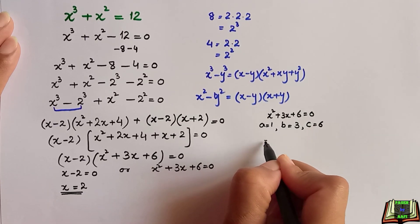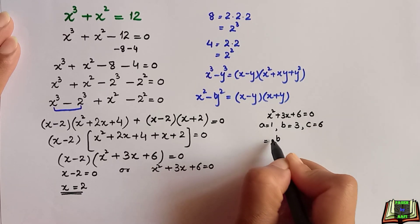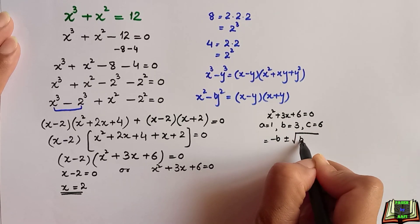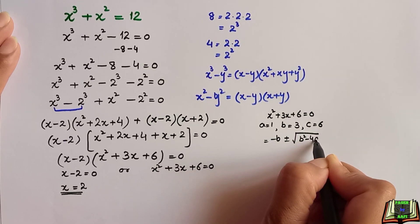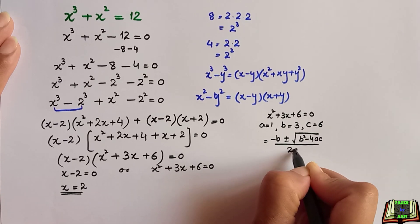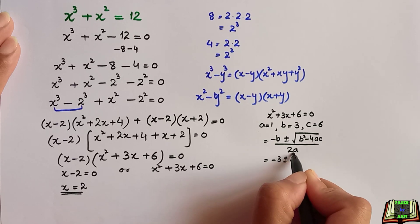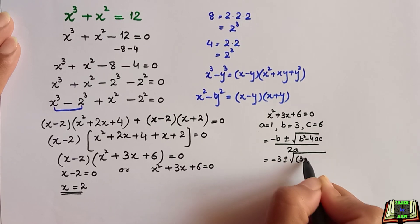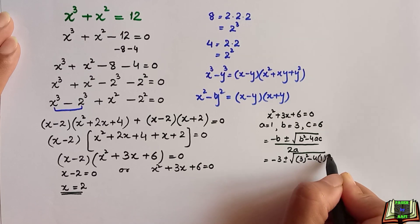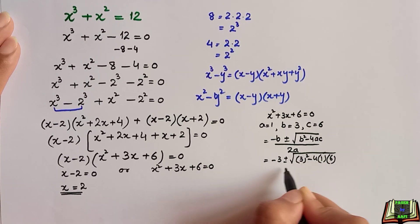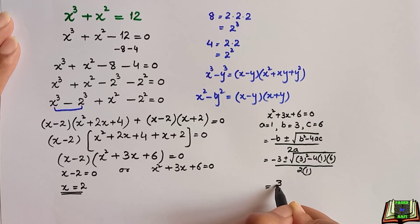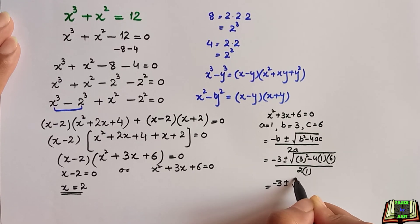Let's revise the quadratic formula: minus b plus minus root of b square minus 4ac all over 2a. Here b is 3, so minus 3 plus minus, b square means 3 square which is 9, minus 4a is 1, c is 6, so minus 4 times 6 is 24, all over 2.